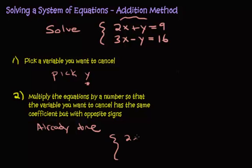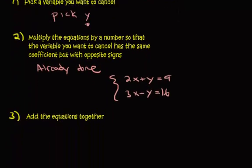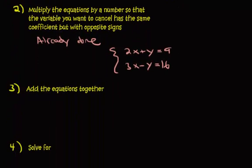I still need to rewrite it so that when I scroll down you can still see it. Now step three, we want to add the equations together. Let's see what happens. 2x plus 3x is 5x. Y plus a negative y makes a 0y, and right now I'm going to write 0y. And then 9 plus 16 is 25.